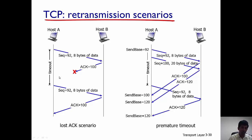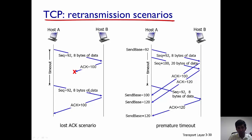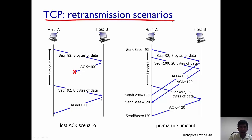What A is going to do is wait. The timer is going to time out, which indicates to A that the acknowledgement has gotten lost. A then sends another packet to B with the same sequence number 92 and 8 bytes of data. Though B has already received that packet, B realizes the acknowledgement was lost and sends the acknowledgement of 100 back to A. This is the first scenario: the lost acknowledgement scenario.